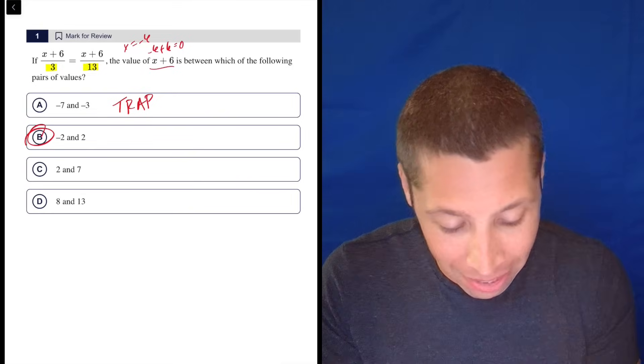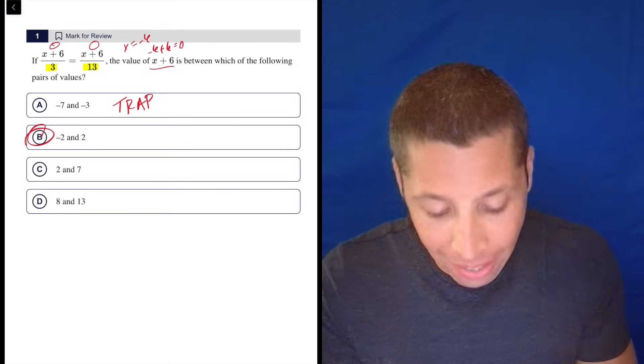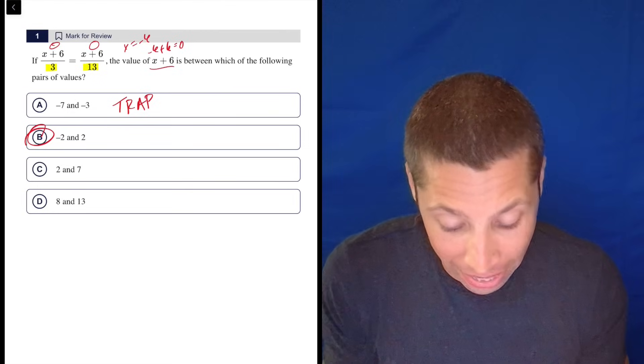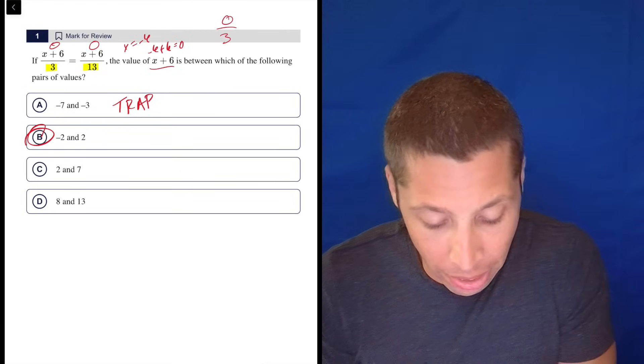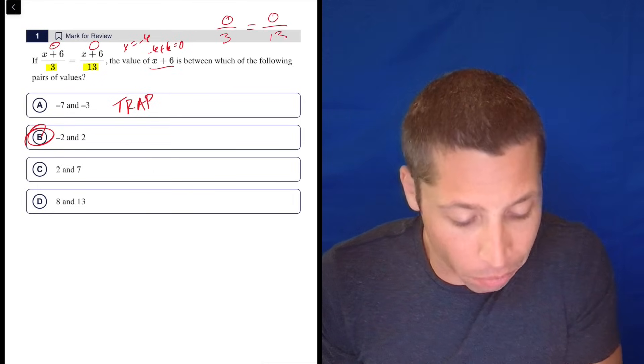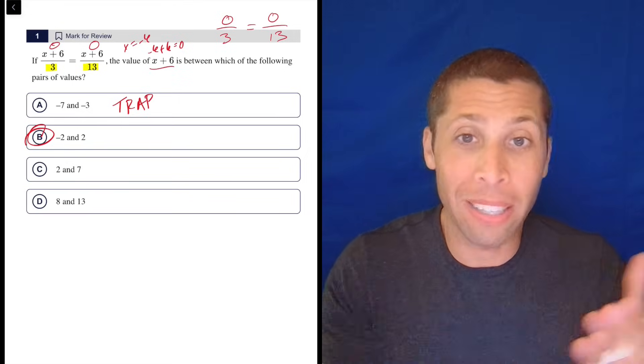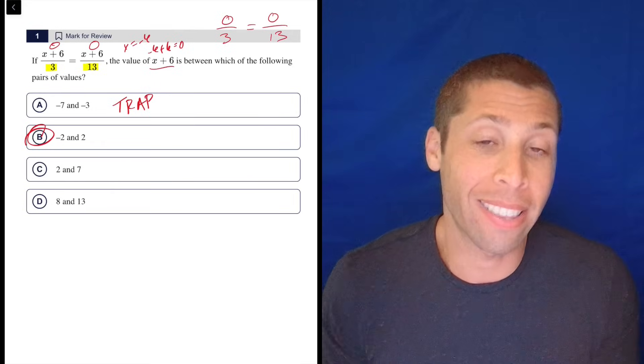The only way that's possible is if the top is zero. And since they're asking about X plus six and X plus six also happens to be the top, that has to be the case, right? Because this is zero over three, which is zero, equals zero over 13. The only way these thirds and thirteenths can be the same is when they're zeros. That's the rule.